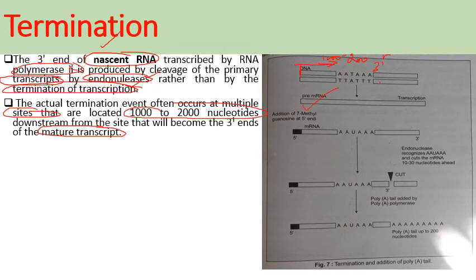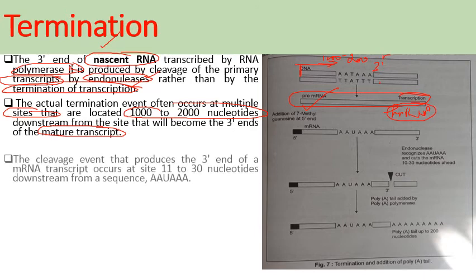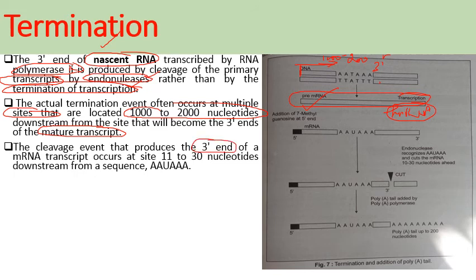The first synthesized RNA in eukaryotes is known as pre-mRNA or hnRNA (heterogeneous nuclear RNA), which undergoes processing to form functional mRNA. The cleavage event that produces the three-prime end of the mRNA transcript occurs 11 to 13 nucleotides downstream from an AAUAAA adenine-rich sequence.